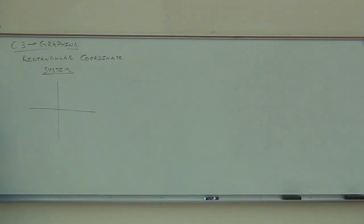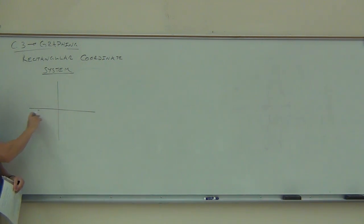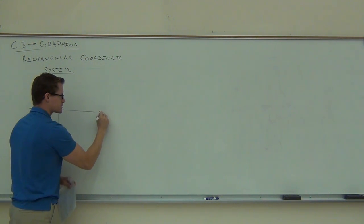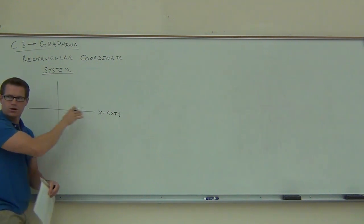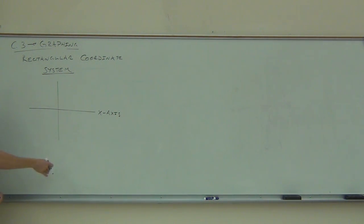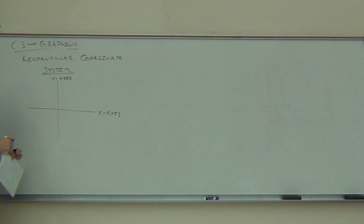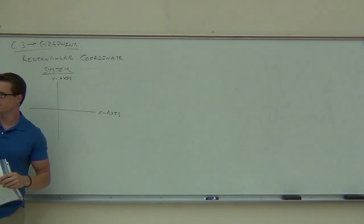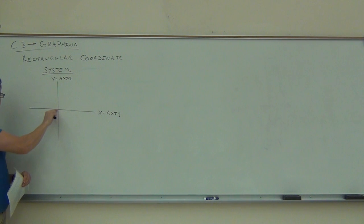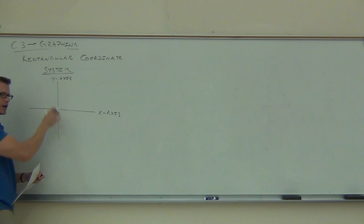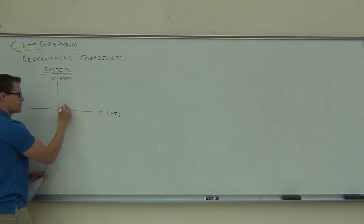That's a rectangular coordinate system, and each of these parts has a name. Specifically, the horizontal axis is our X axis, where all of our X coordinates are valued. The vertical one is the Y axis. These axes intersect at exactly one point — the point on both the X and Y axis — which is called the origin, with coordinate zero, zero. We know that we have to have an X coordinate and a Y coordinate.